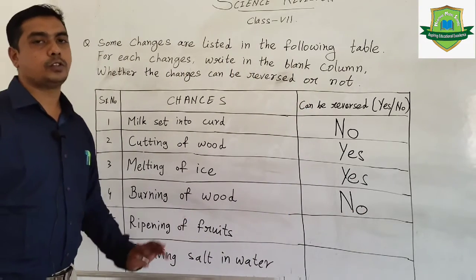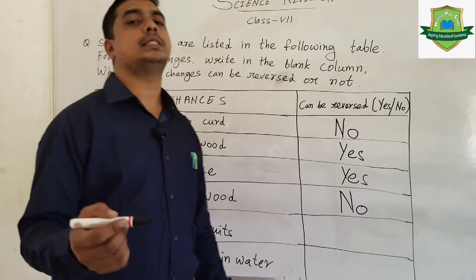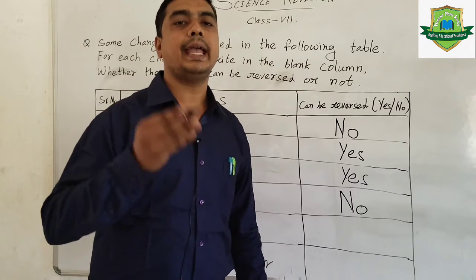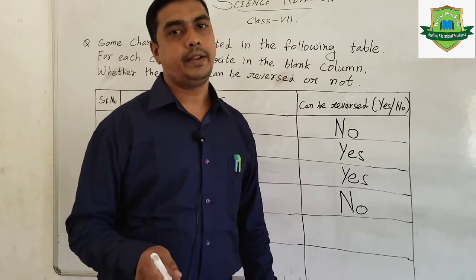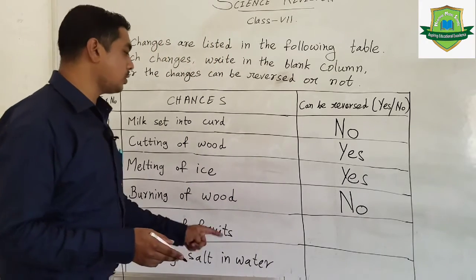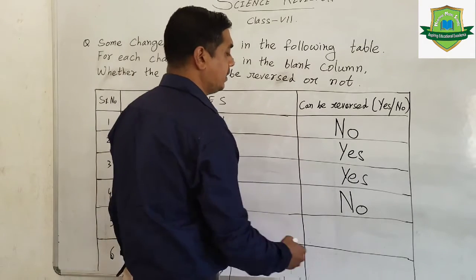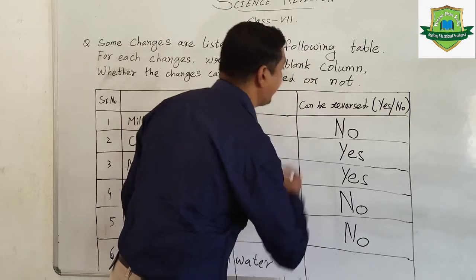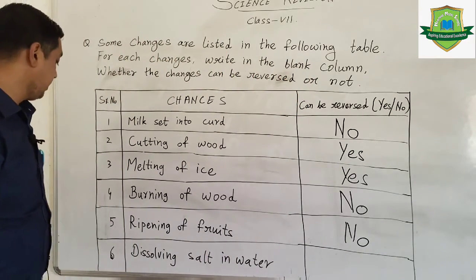Now there is ripening of fruits. Any fruits, once they get ripe, we cannot get this fruit back as raw again. So ripening of fruit is also something we cannot reverse. Can be reversed? No, we cannot reverse it.